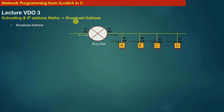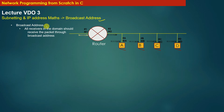Next we will discuss the concept of broadcast address. We use the broadcast address when we want a certain set of machines to receive and process the same packet. All receivers in the domain should receive the packet through the broadcast address. Domain here means the same broadcast domain, that is all the machines present in the same subnet.